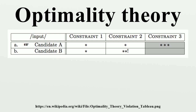Optimality theory supposes that there are no language-specific restrictions on the input — this is called richness of the base. Every grammar can handle every possible input. For example, a language without complex clusters must be able to deal with an input such as FLASK. Languages without complex clusters differ on how they will resolve this problem: some will epenthesize and some will delete. Given any input, Gen generates an infinite number of candidates, or possible realizations of that input. A language's grammar determines which of the infinite candidates will be assessed as optimal by EVAL.